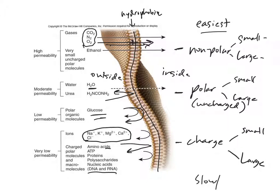So a small nonpolar will get through easiest, followed by a large nonpolar. Then we get to the small polar, followed by a large polar. Then we get to the small charge, followed by a large charge.